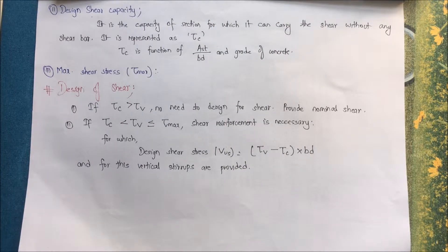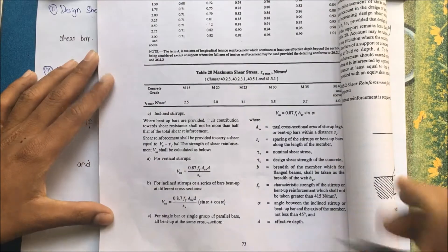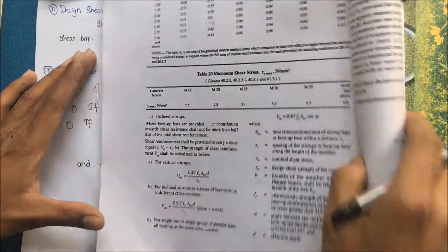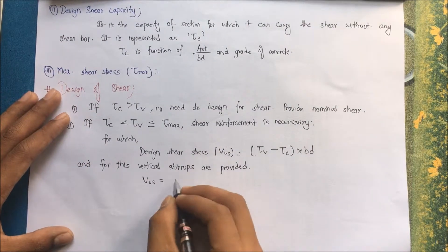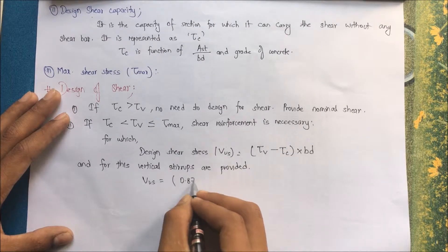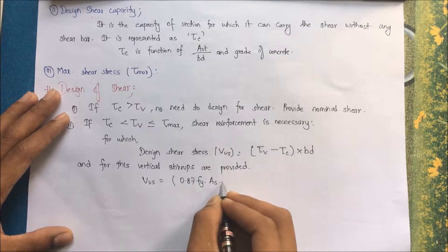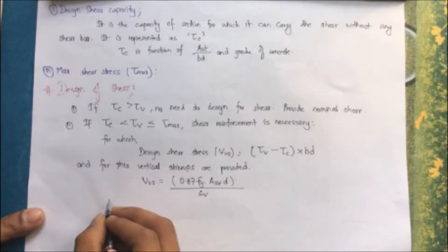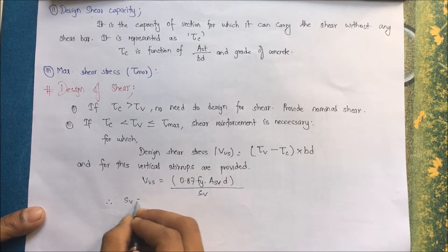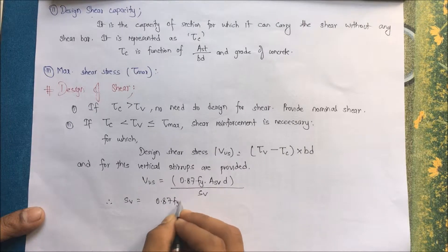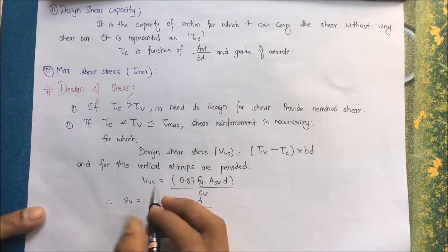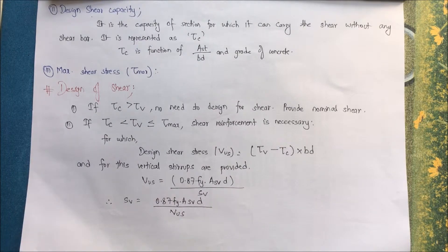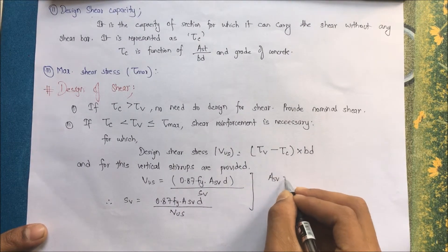The strength of vertical stirrups is given as Vvs = 0.87 × fy × Asv × d divided by Sv. Since the design shear force Vvs equals the design shear stress calculated above, we can find the spacing of stirrups: Sv = 0.87 × fy × Asv × d divided by Vus.